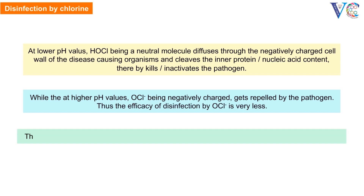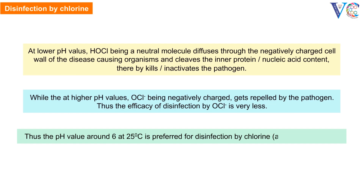Thus the efficacy of disinfection by OCl⁻ is very less. At a pH value around 6 and at 25 degrees centigrade, the disinfection by chlorine and its compounds is preferred.